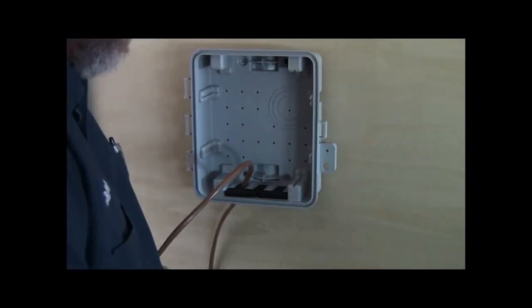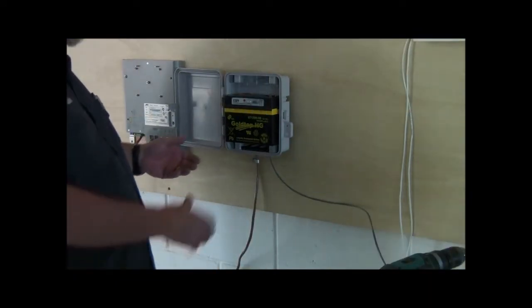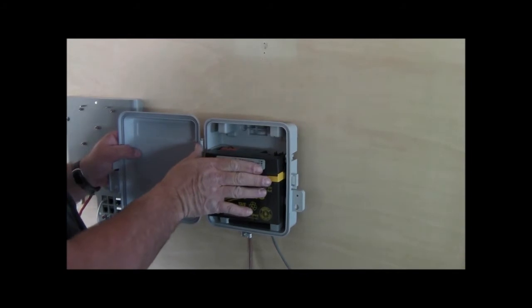It works best to work from the ONT back toward the utility power source. This keeps any inadvertent shorts from occurring during wire stripping, cutting, or installation.